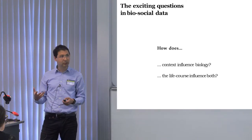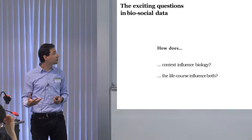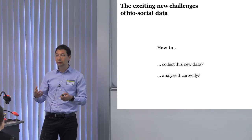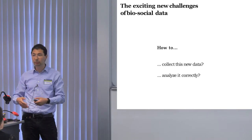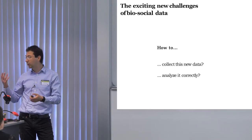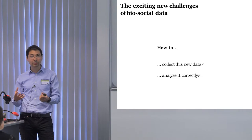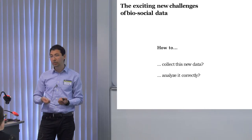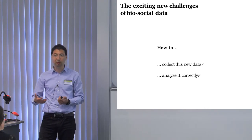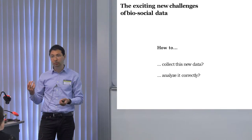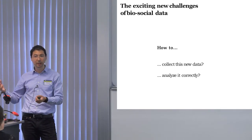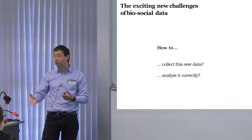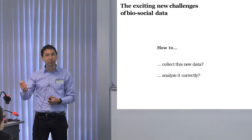With new data always comes new difficulties. Some of the new things we have to figure out is how to collect this data — surveys traditionally have been done very differently, with interviewers going to homes or by telephone. Now we need to collect things like blood pressure or actually getting blood. There are different models: you could ask people to go to a clinic, send interviewers, or send nurses. We need to figure out the best way to do that.